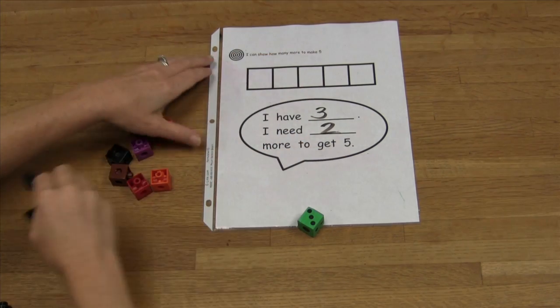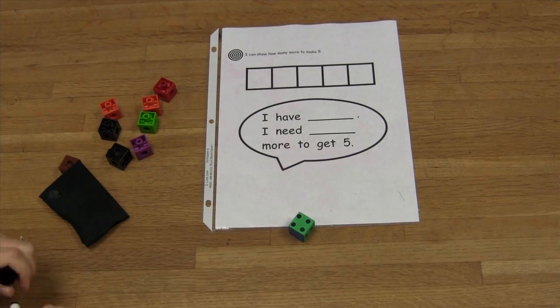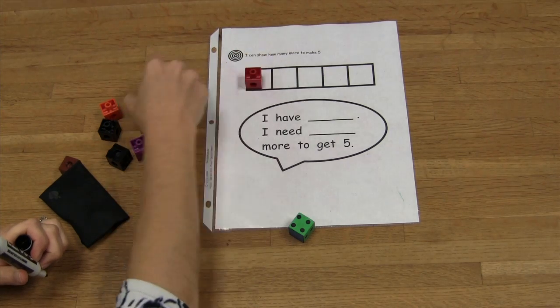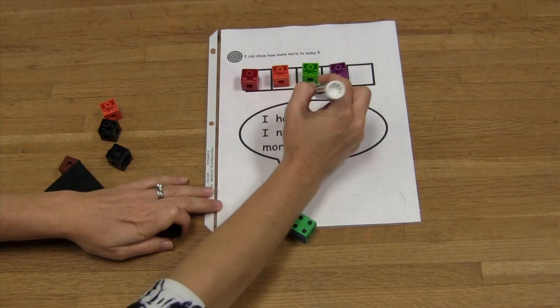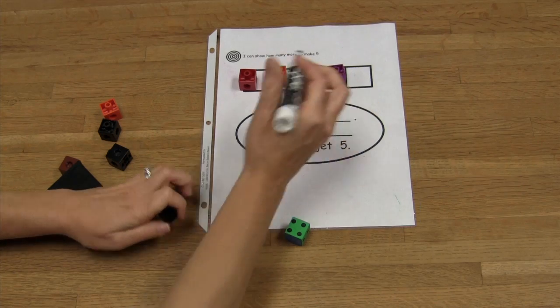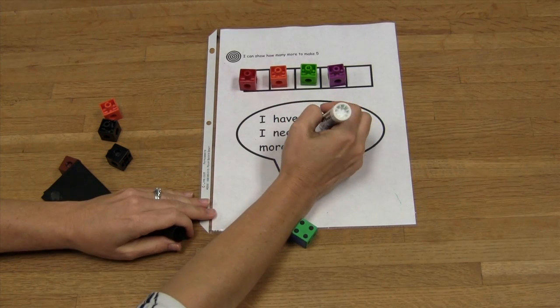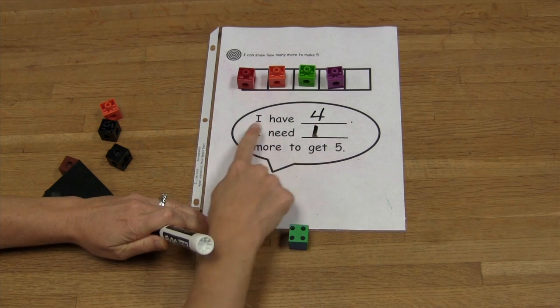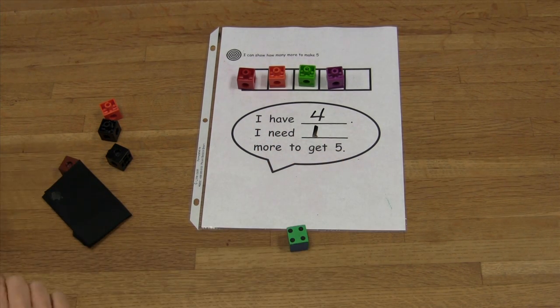When you're done, clear your manipulatives, erase, and start again. I have four: one, two, three, four. I need one more to get five. Continue playing until the end of math station time.